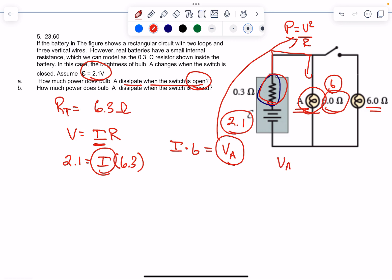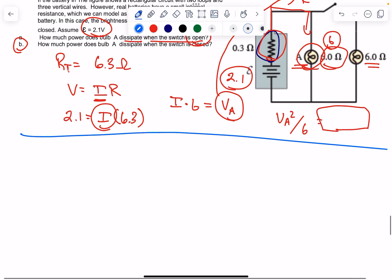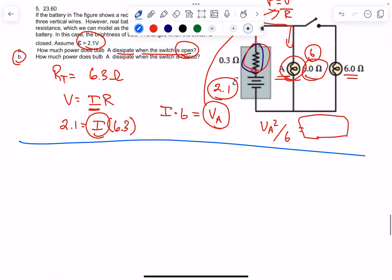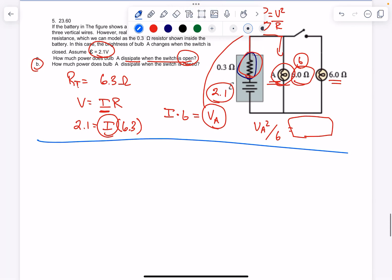Now for part B: how much power is dissipated when the switch is closed? It's really the same process that we just did, but you have to find what is the current traveling through here.